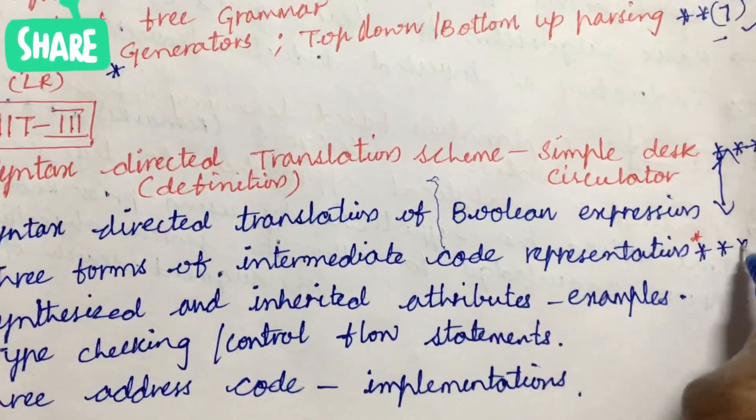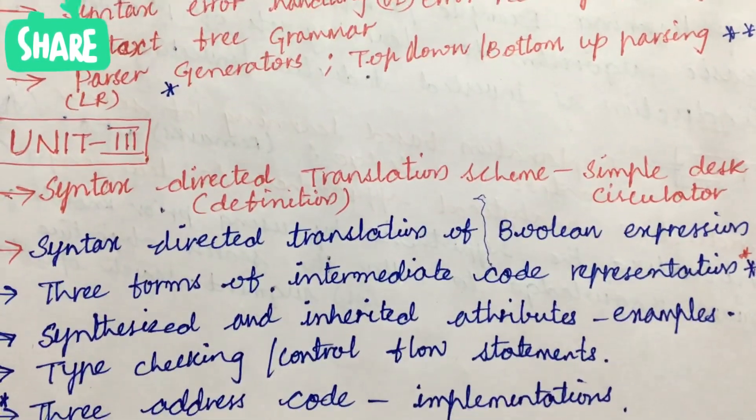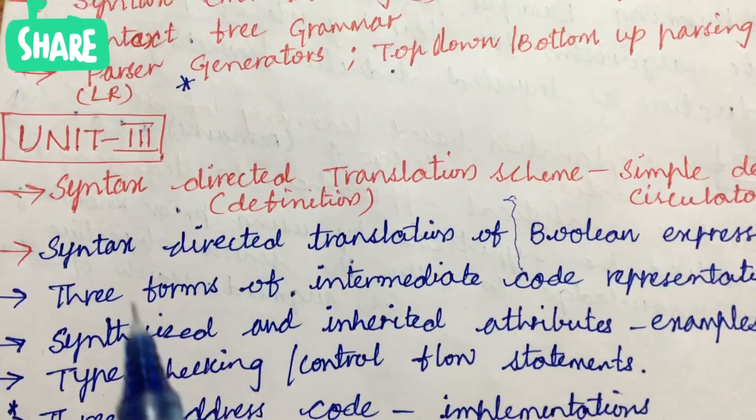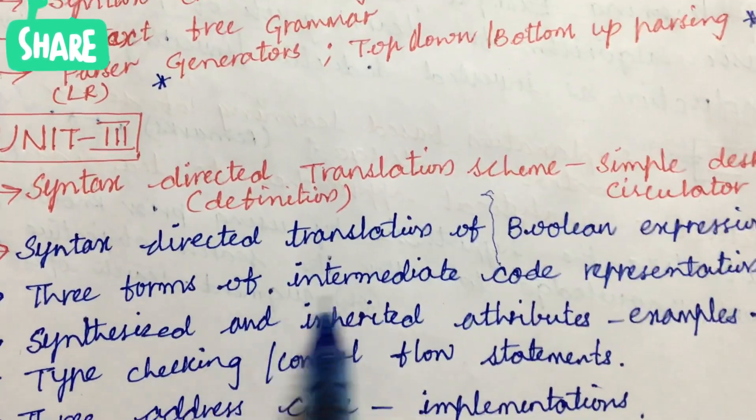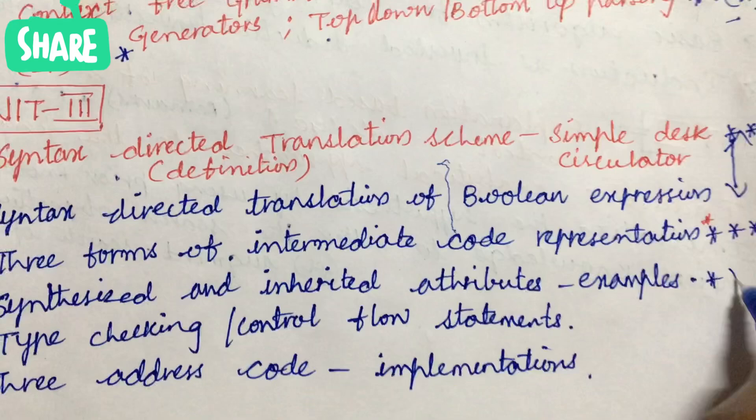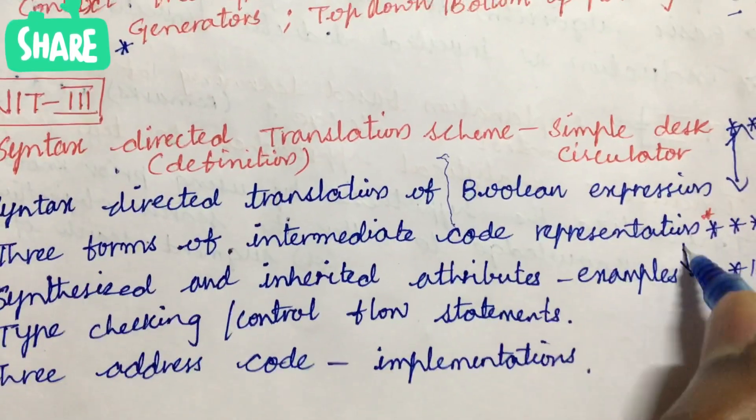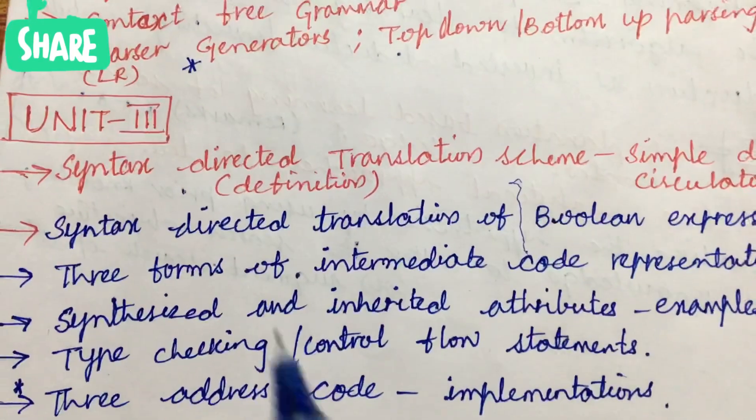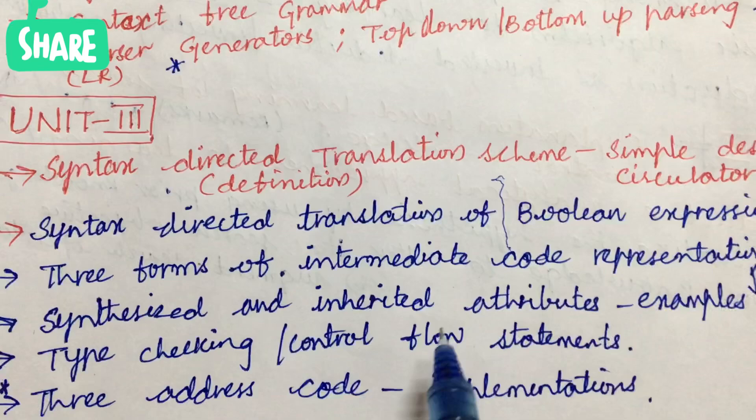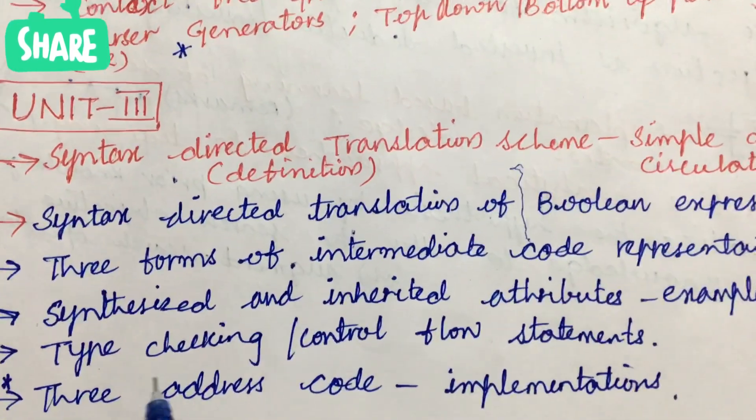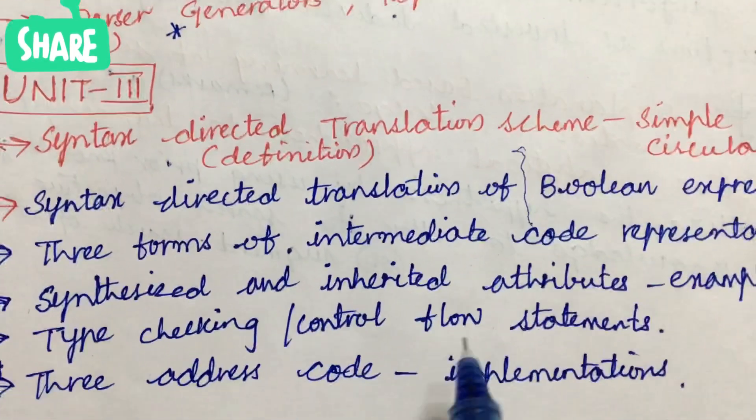Later, three forms of intermediate code representation is also asked several times, which the analysis has shown in the previous year question papers. Later, synthesized and inherited attributes is one of the seven-mark questions. When they ask this, they may be asking even this under this. Later, type checking as well as control flow statements as well as three-address code and its implementation is also one of the very important questions.